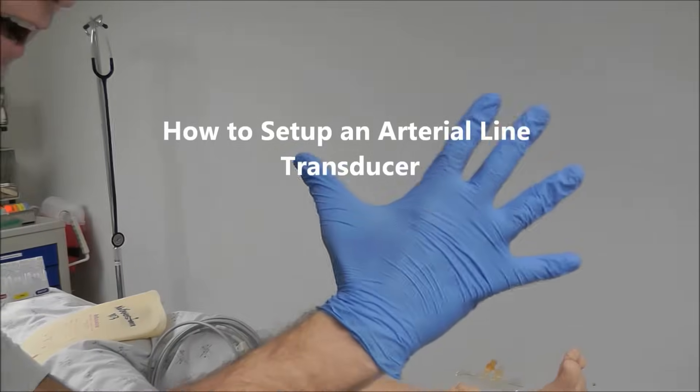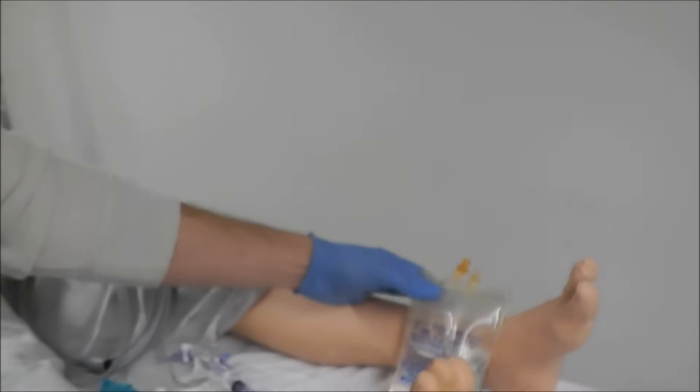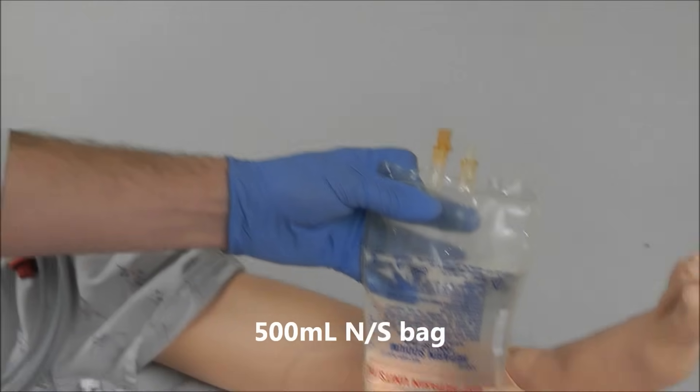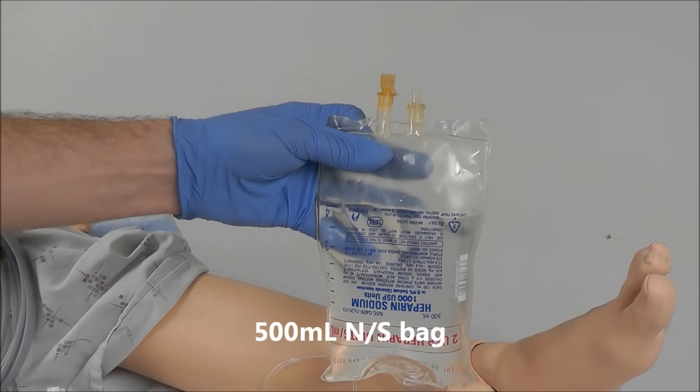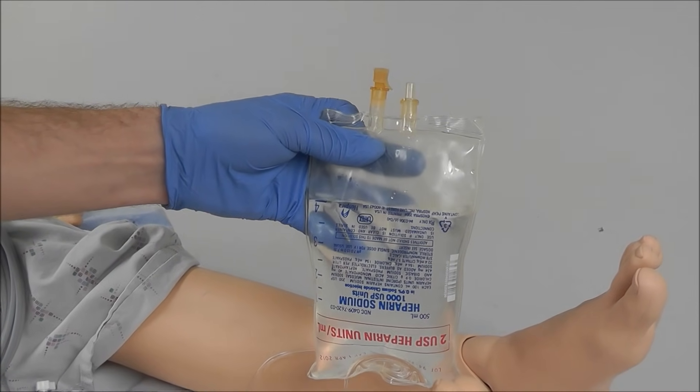Let's look at the five things we're going to need when we're setting up an arterial line. Number one is you're going to need a 500cc bag of saline or heparinized saline.